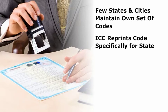For example, many states and some cities are working with the ICC to revise the International Building Code, IBC, as required for their state. The ICC then reprints the code specifically for that state as a customized code.